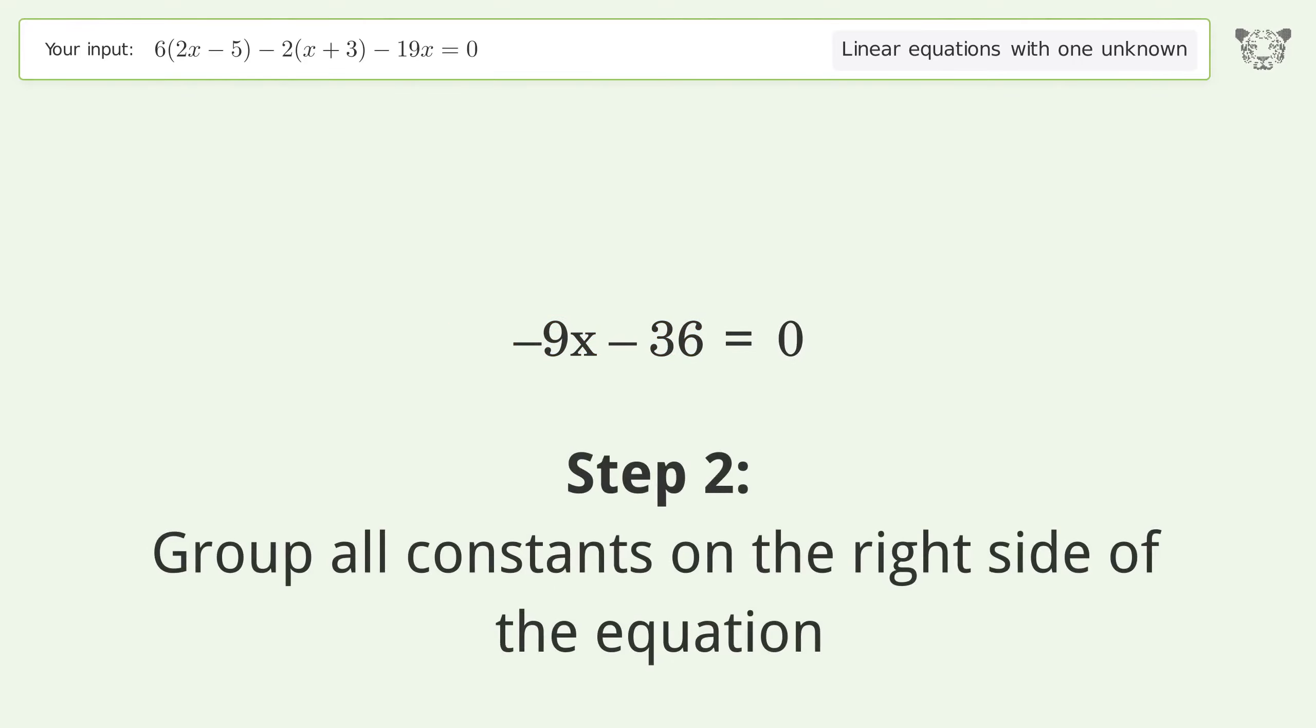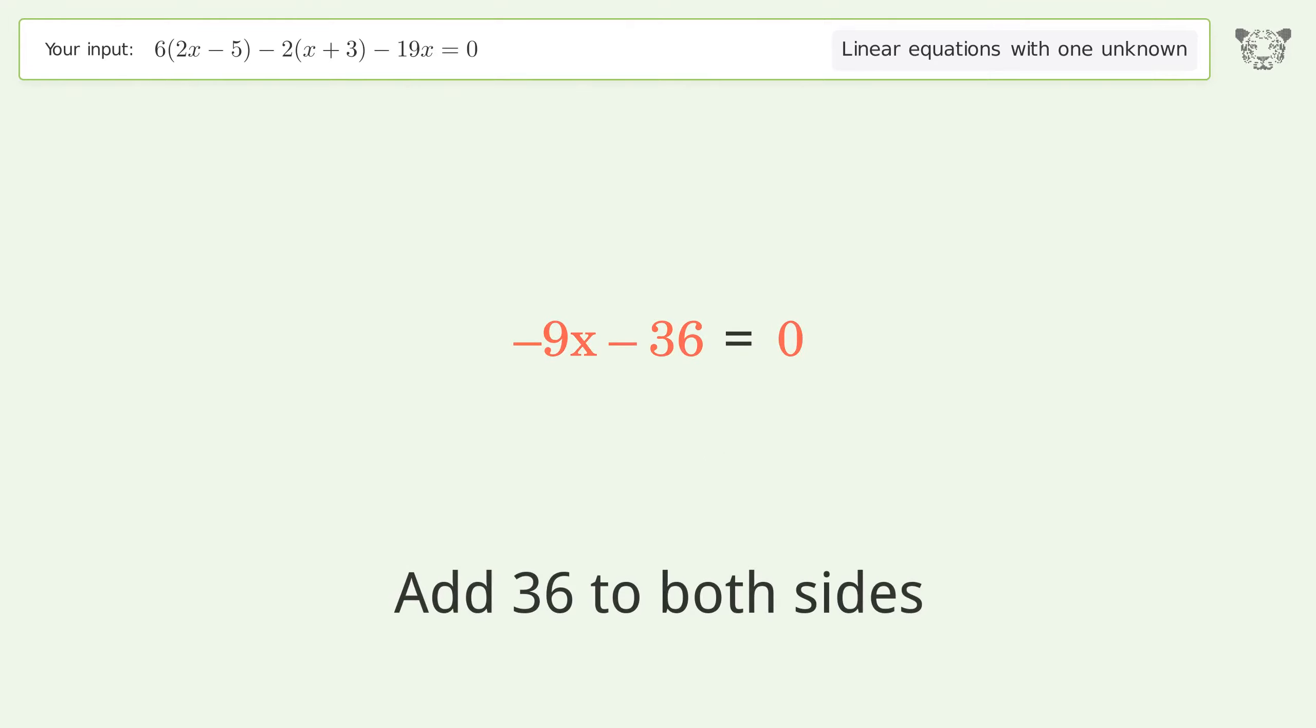Group all constants on the right side of the equation. Add 36 to both sides, then simplify the arithmetic.